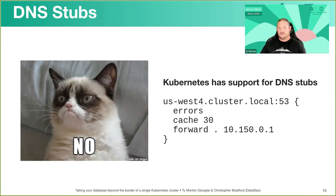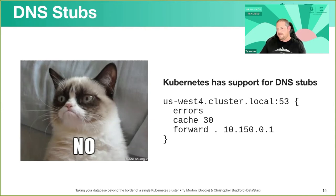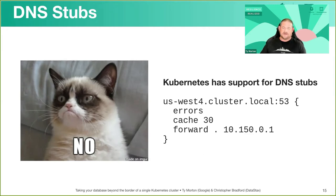One option is leveraging DNS services within each cluster and telling Kubernetes to forward requests from cluster A to cluster B via a stub zone. For example, forwarding requests for us-west-4 from us-east-4 to the specific DNS server in that zone. The big gotcha is that it requires a different DNS suffix set through a kubelet flag, which probably isn't available in every managed Kubernetes environment.